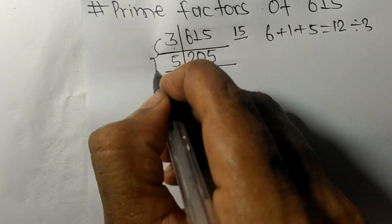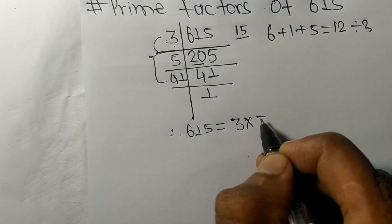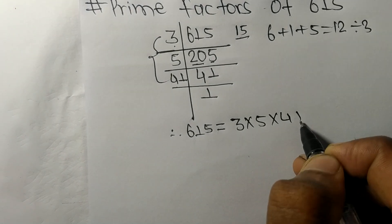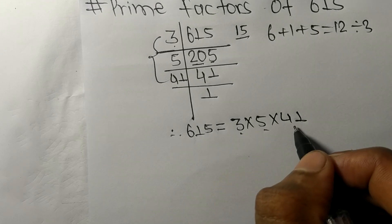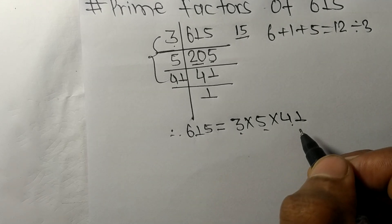...from this side we have 3 times 5 times 41. So 3, 5, and 41 are the prime factors of 615.